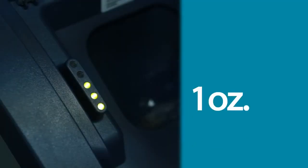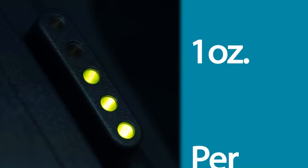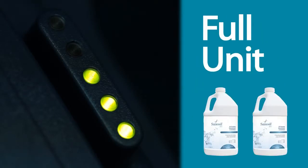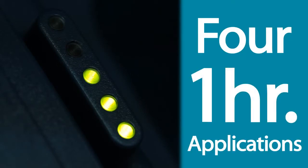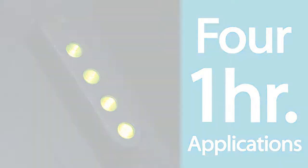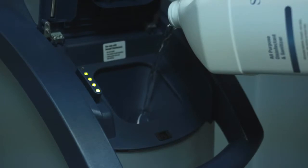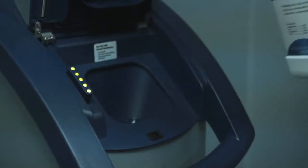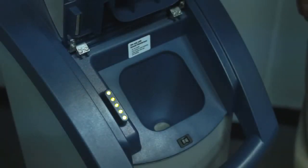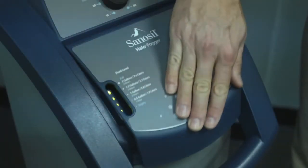In operation, the Halo dispenses approximately one ounce of Sanosil per minute and holds up to two gallons of disinfectant when full, enough for four one-hour applications. Stop pouring when the top green light on the fluid indicator is illuminated. Do not overfill. Wipe up any spills and close the reservoir door, ensuring it clicks shut.